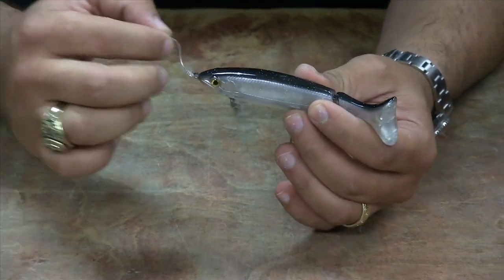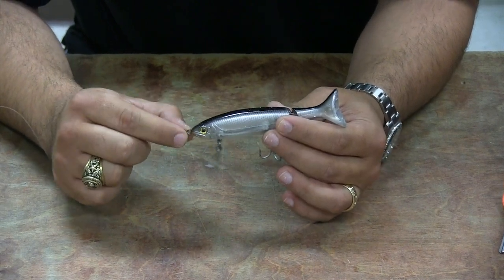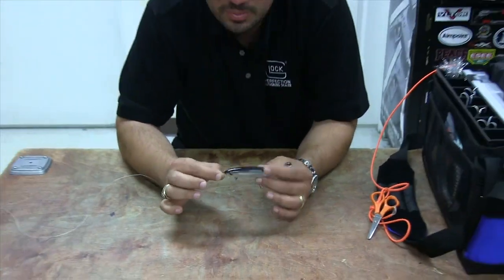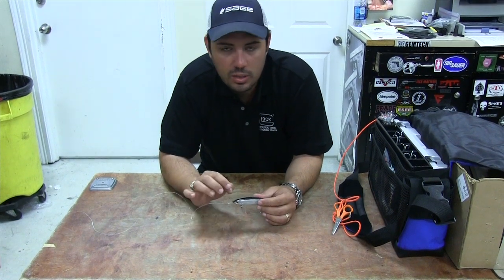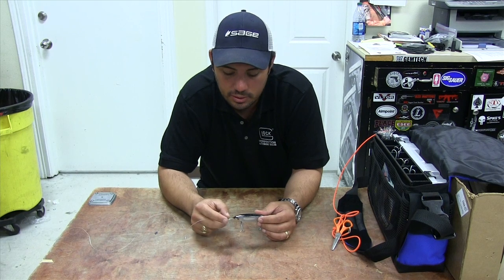You want this to be real light and free flowing. It's one of the reasons we use circle or loop knots is we want the bait to be able to move and twist. That's why a lot of guys will put a split ring to the eyelet and then tie their clinch knot to the split ring.